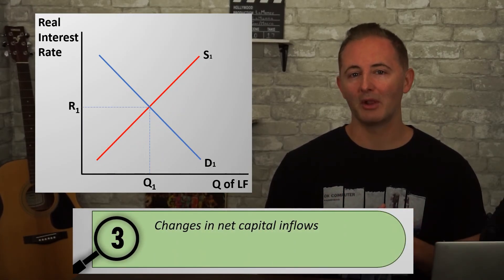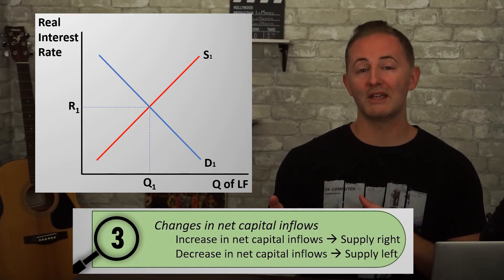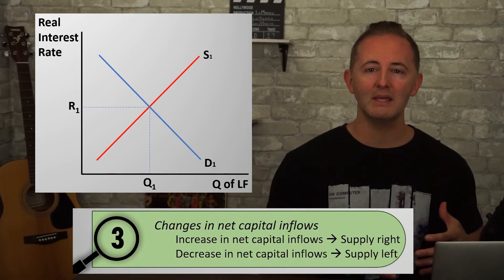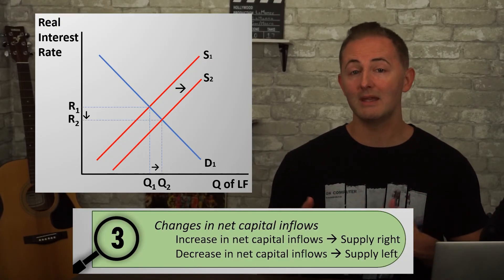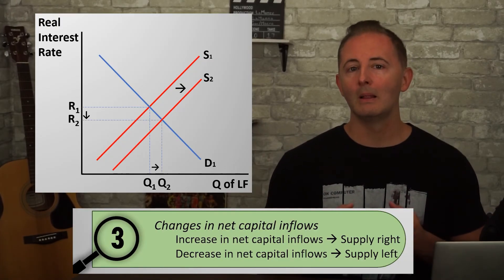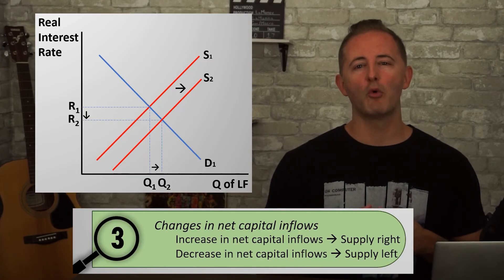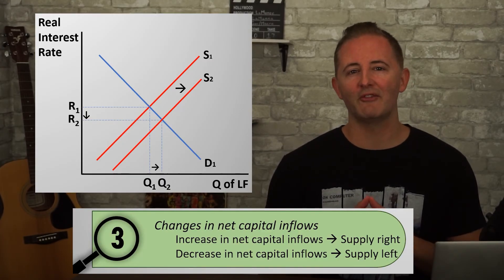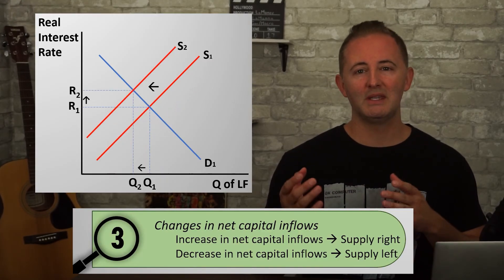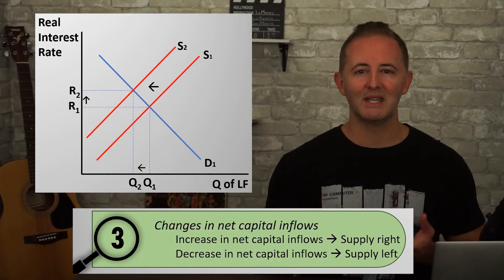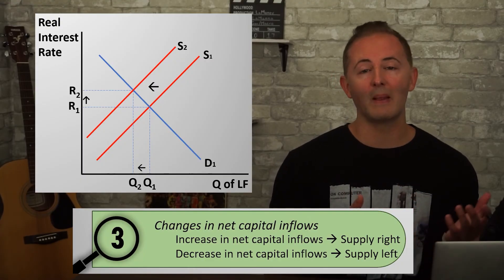The last supply shifter is changes in net capital inflows. If more foreigners save their money in the US, the supply curve would shift to the right in the US, lowering real interest rates. And if more Americans chose to save their money in foreign markets, this would decrease savings here, shifting the supply curve to the left.